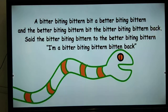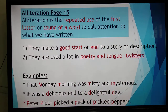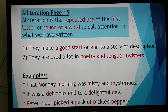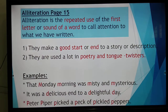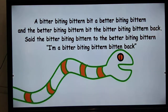Some examples of alliterations: 'Monday morning was misty and mysterious' — see all the words starting with M. Then: 'It was a delicious end to a delightful day.' For our writing, we can change it slightly to: 'It was a delicious end to not so delightful a day' — see how the D's are used. Our writings can become very interesting this way. Similarly, 'Peter Piper picked a peck of pickled peppers' — all letters beginning with P. If we can make our own tongue twisters and use them in writing, it becomes very interesting.